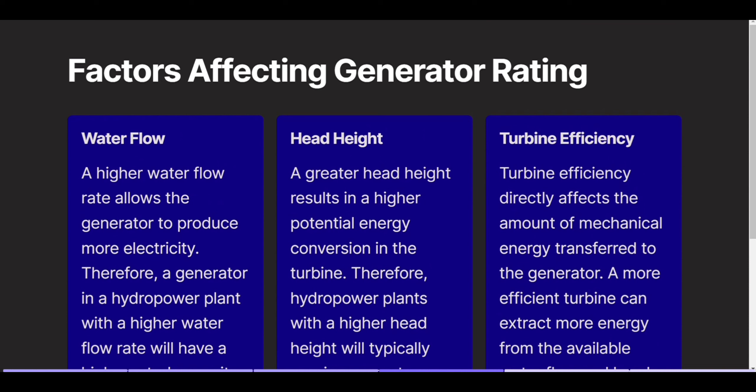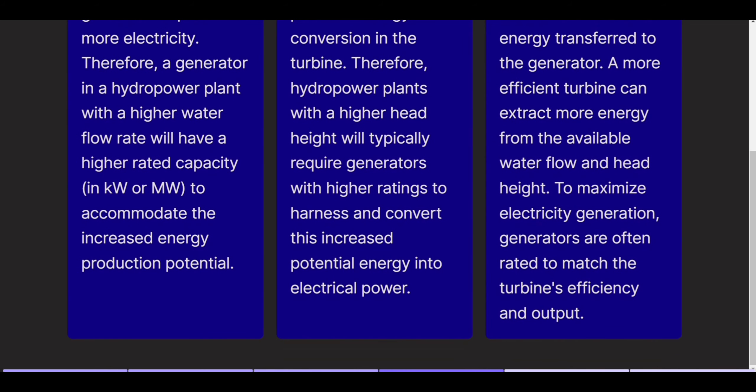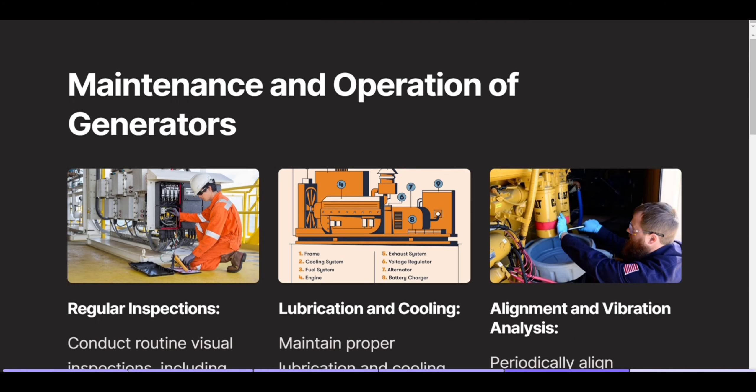Turbine efficiency directly affects the amount of mechanical energy transferred to the generator. A more efficient turbine can extract more energy from the available water flow and head height. To maximize electricity generation, generators are often rated to match the turbine's efficiency and output.